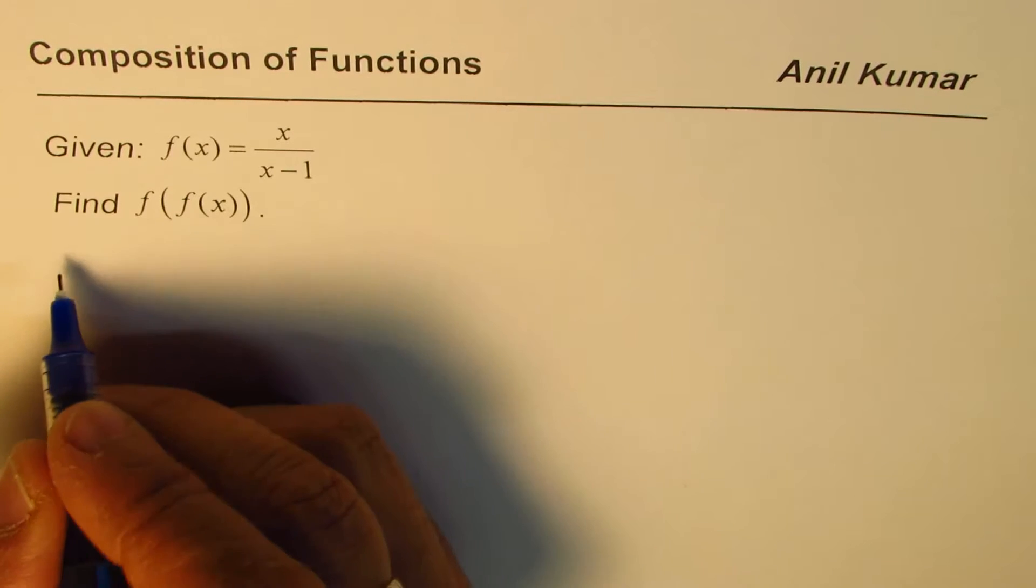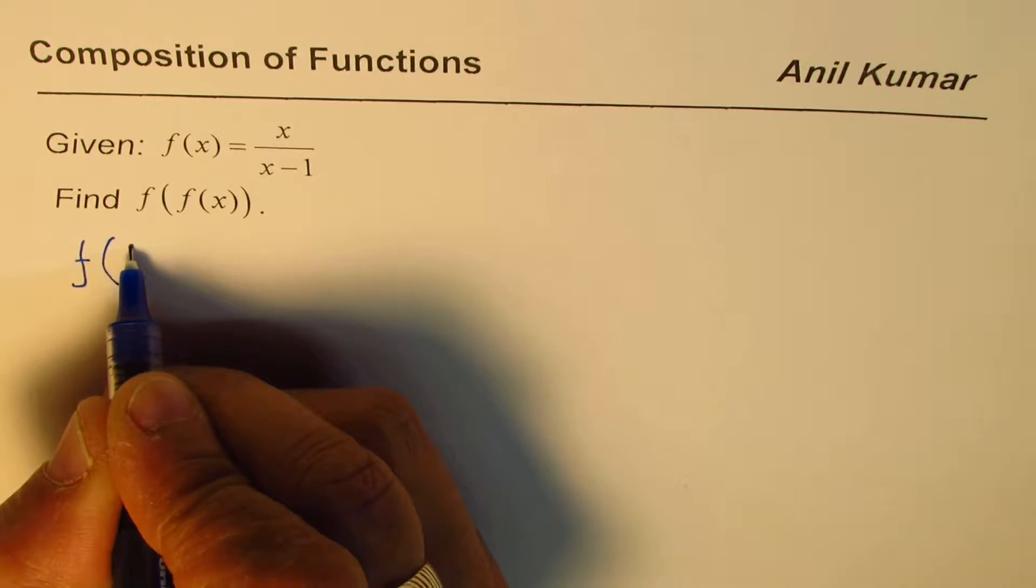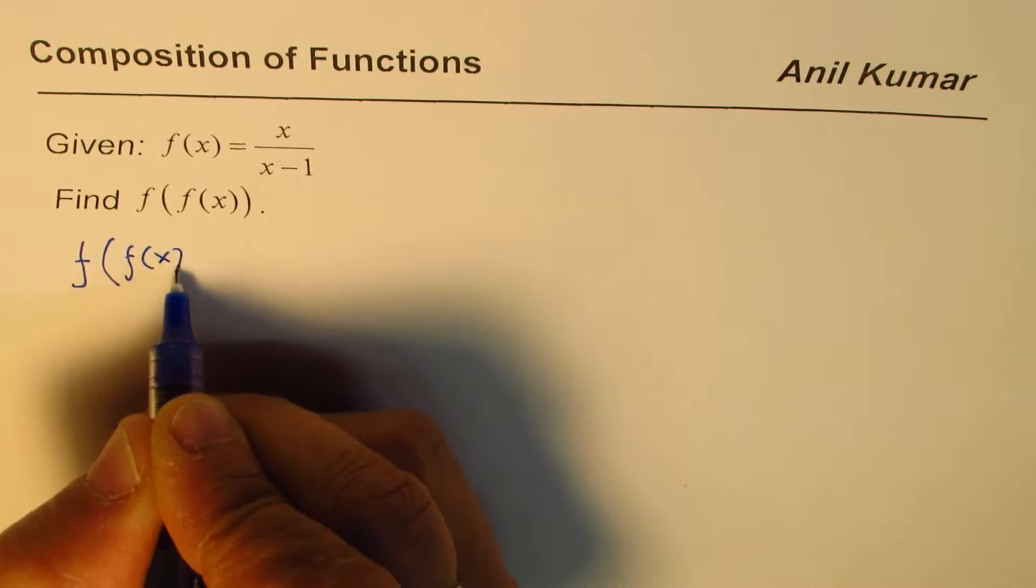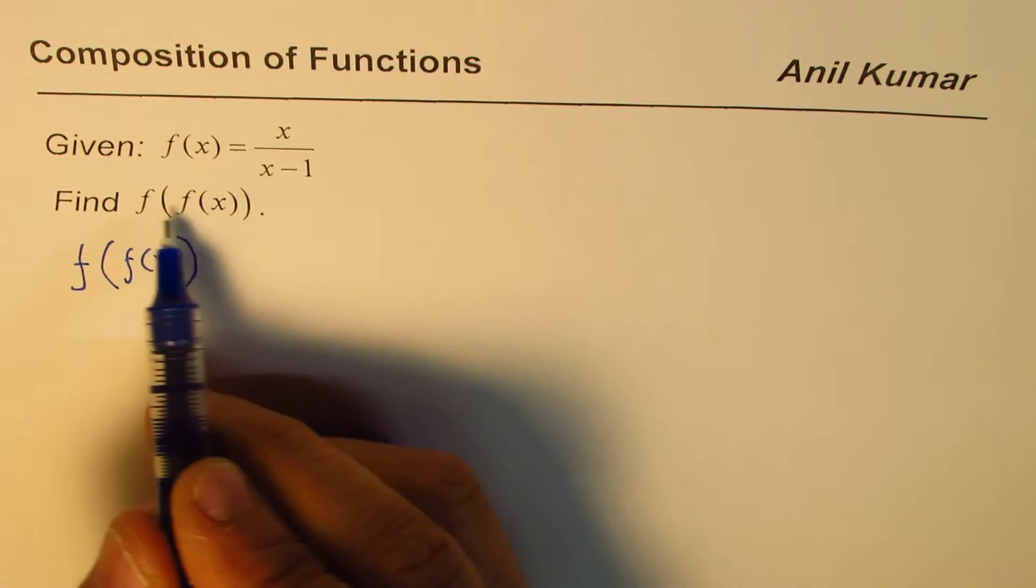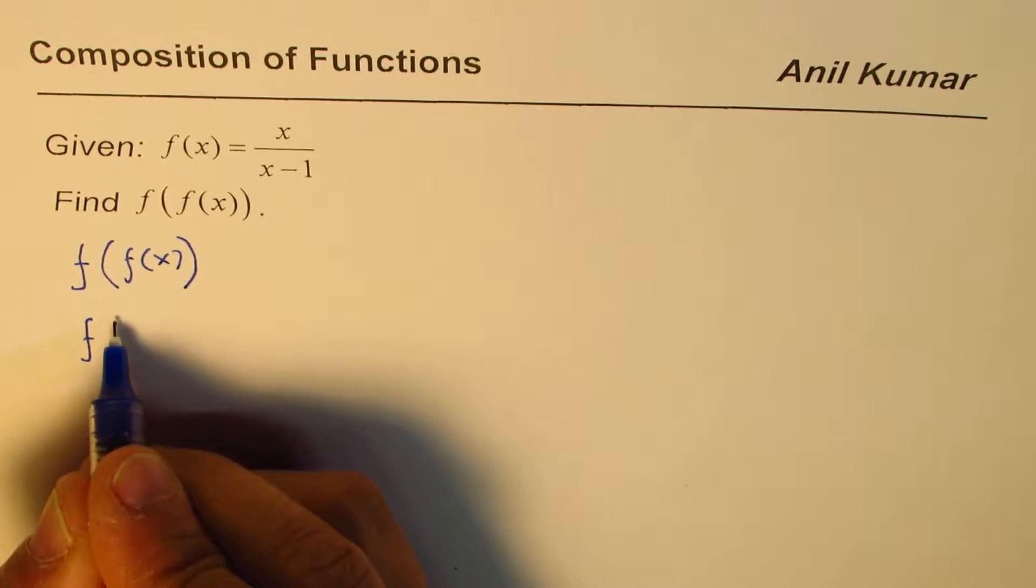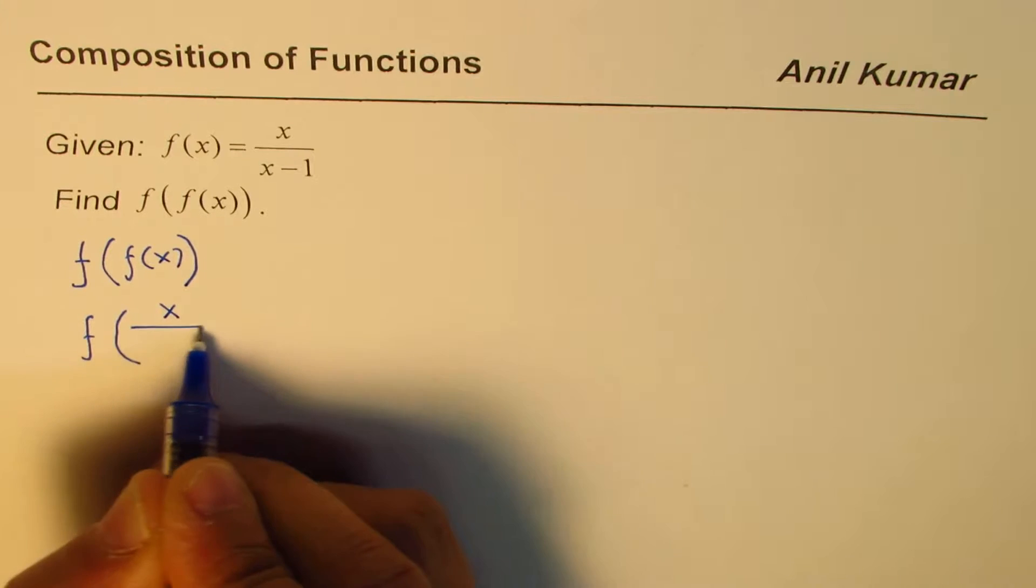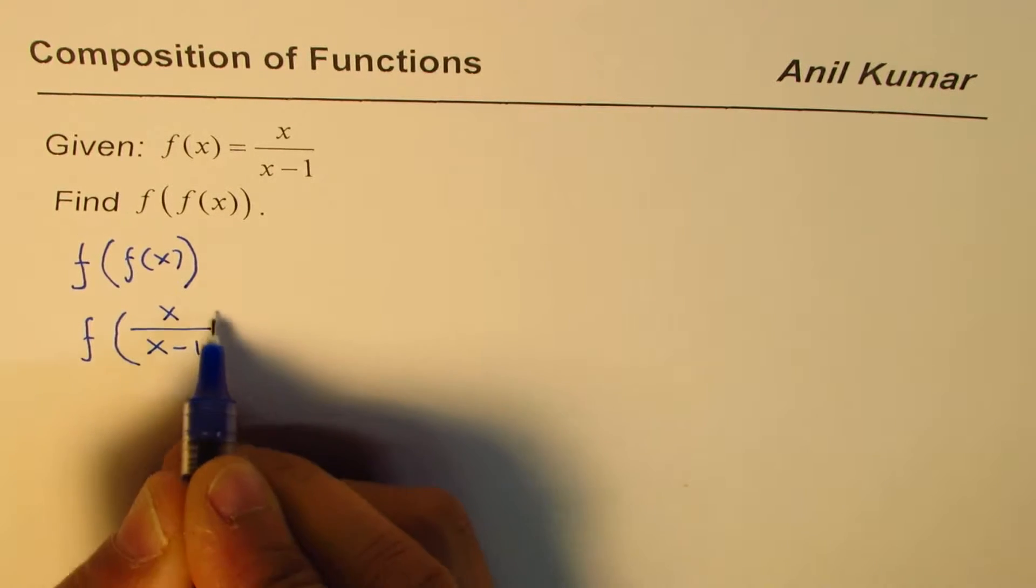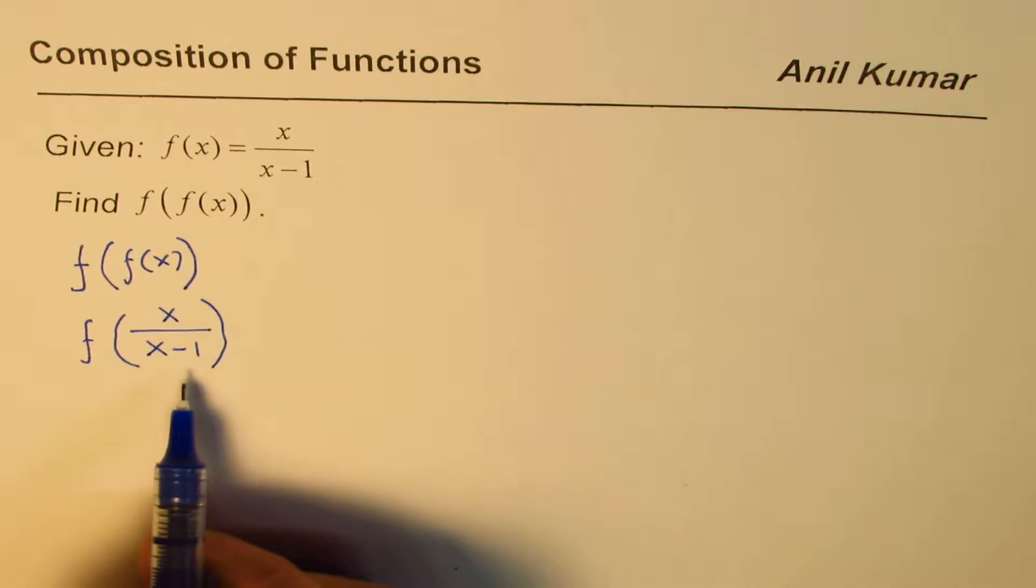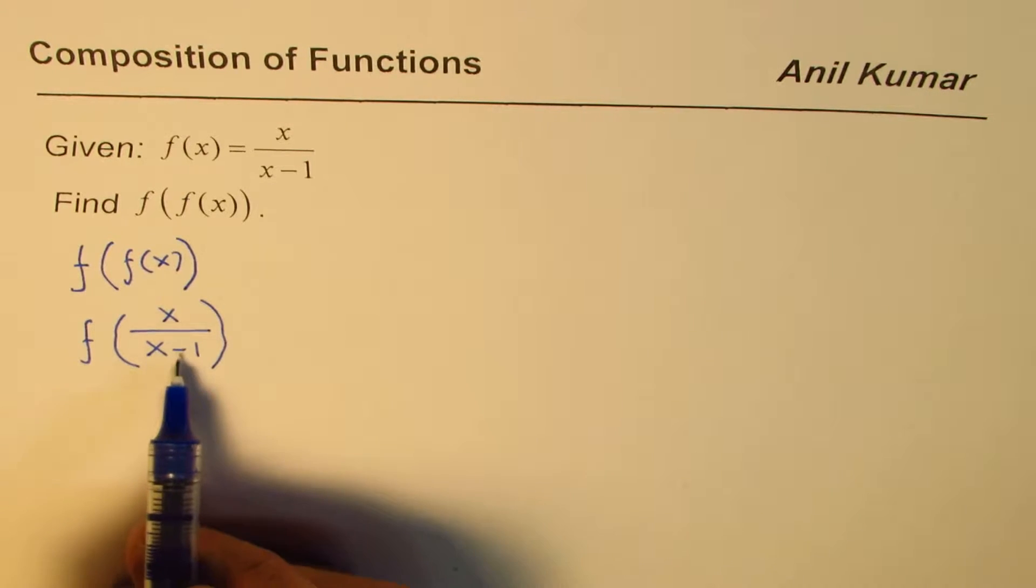So let's see how to do that. When we say f of f of x, what do we mean? It's function of function. What is f of x? f of x is given to us as x over x minus 1.